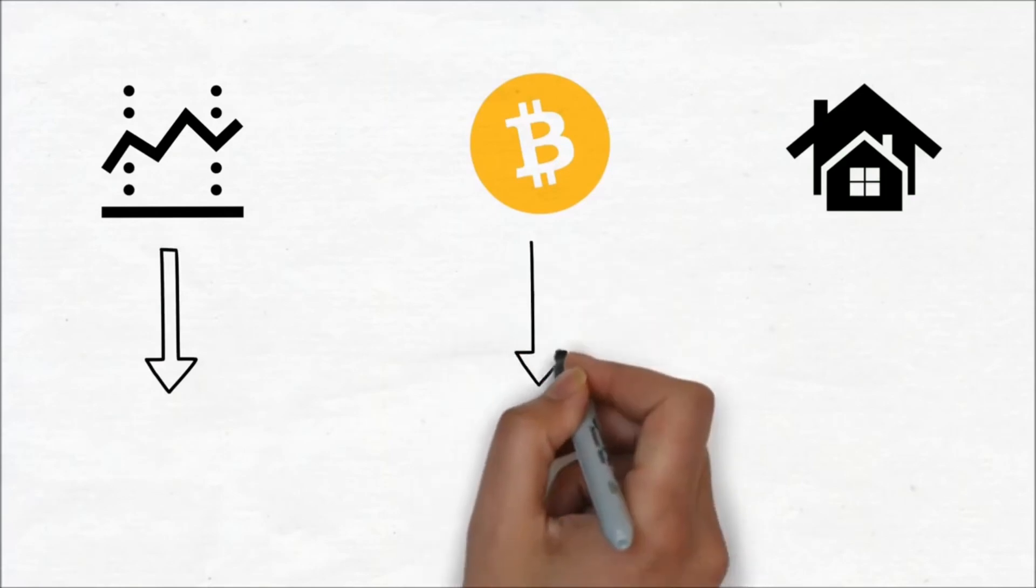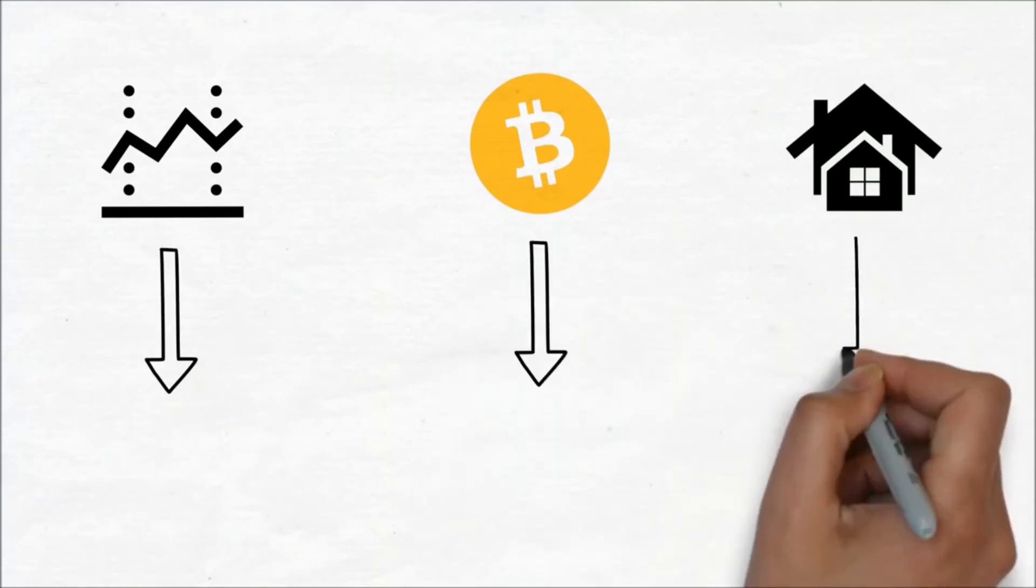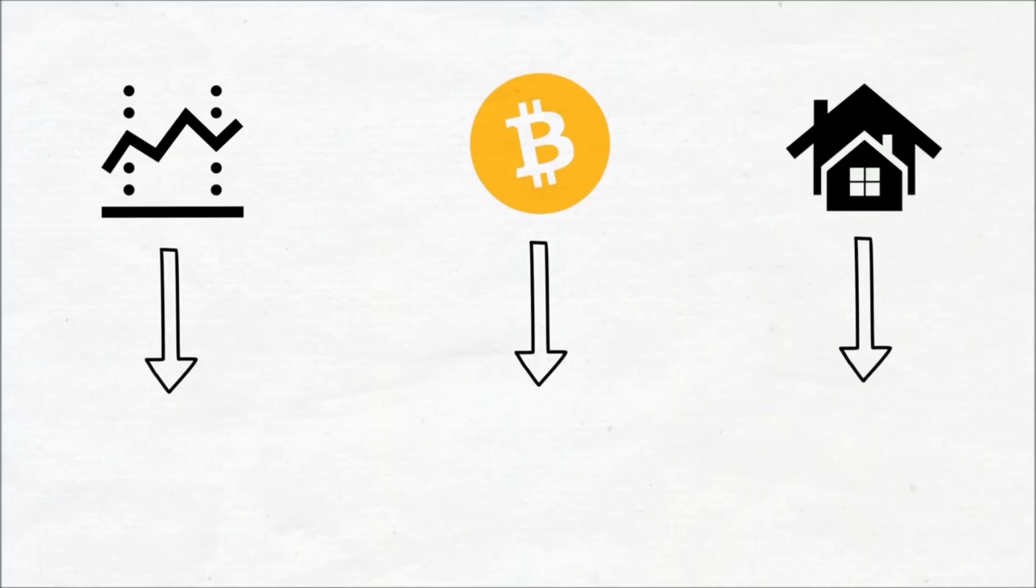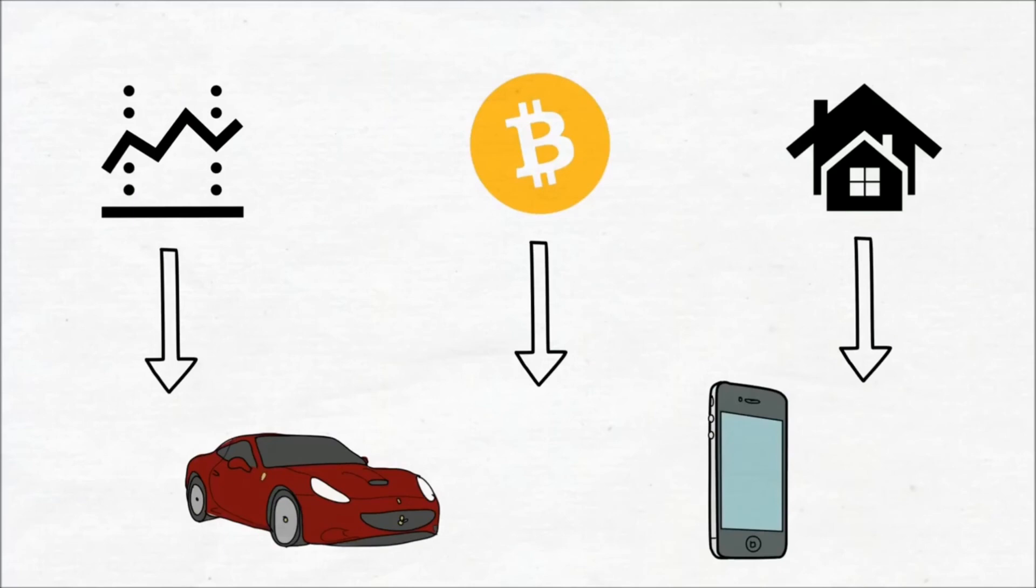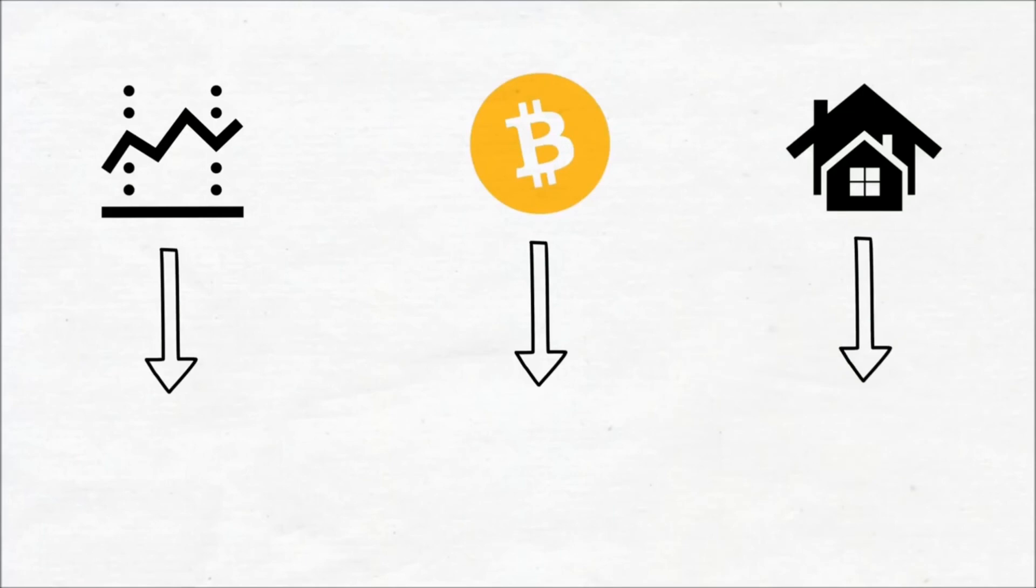The only difference between poor, middle class and rich is that the poor or middle class people first spend their money on expenses and at last they pay themselves. Due to which most of the time they could not even save money for something, nor do they invest in any assets. But at the same time, rich people first pay themselves and later they spend on expenses.